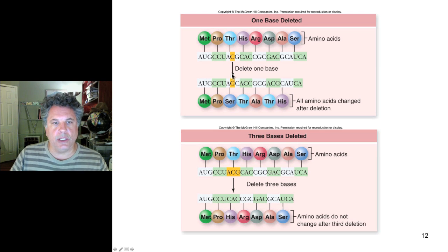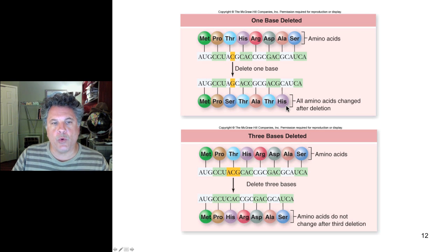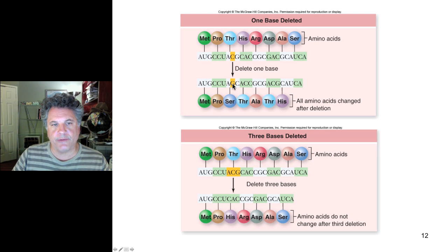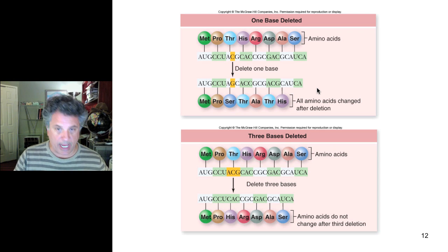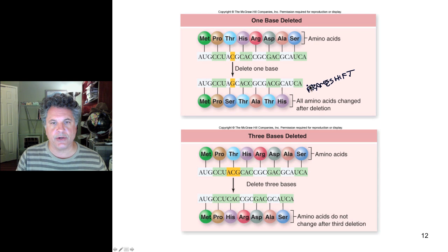When they deleted a single base, they still got protein out — protein synthesis was not completely disrupted — but the sense of the protein was disrupted. At the point of the mutation and downstream, the amino acid sequence was changed. But upstream, before the deletion, the sequence of amino acids was normal, or wild type. They called this type of mutation a frameshift mutation, because the reading frame of the messenger RNA has been changed.